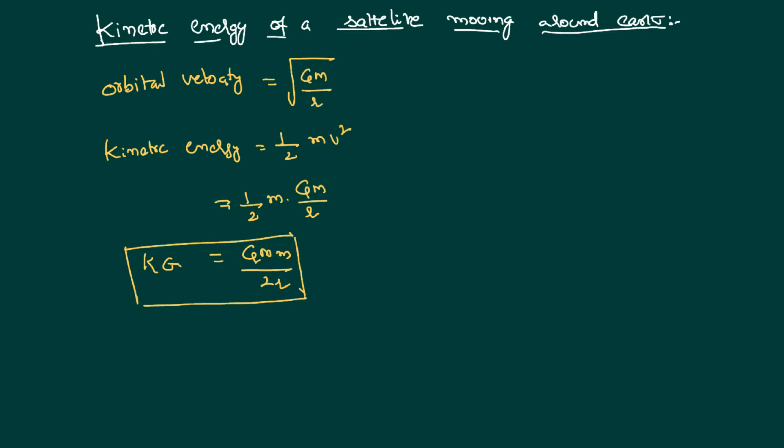If you remember the equation we have derived for gravitational potential energy at a certain height, it is minus gmm by r. So now we know both potential and kinetic energies.